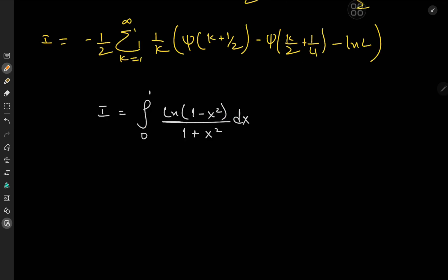One thing to notice about the target integral is that we have terms like (1 minus x squared), or equivalently (1 minus x)(1 plus x), and of course the (1 plus x squared) term. When we have terms like that and we're integrating from 0 to 1, a particular substitution can be very useful. That particular substitution is the Weierstrass substitution, where we let x equal (1 minus t) over (1 plus t). This is one of the coolest transformations in existence.